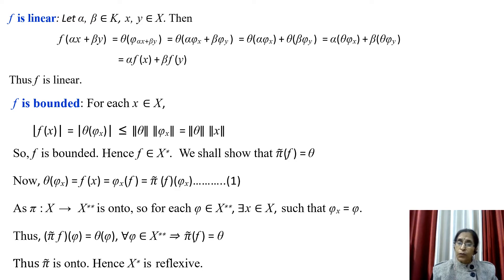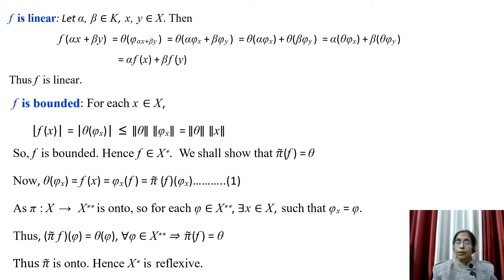Now we show f is bounded. For any x in X, |f(x)| = |θ(φ_x)|. Since θ is a bounded linear functional on X**, this is less than or equal to ‖θ‖·‖φ_x‖. Since φ_x = π(x) and π is an isometry, ‖π(x)‖ = ‖x‖. So |f(x)| ≤ ‖θ‖·‖x‖, showing f is bounded. Since f is a bounded linear functional, f belongs to X*.